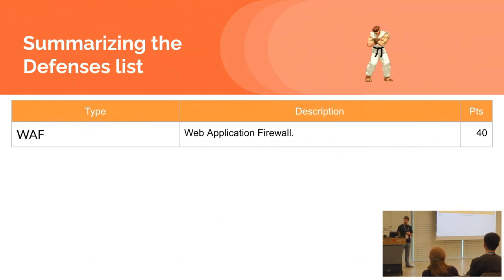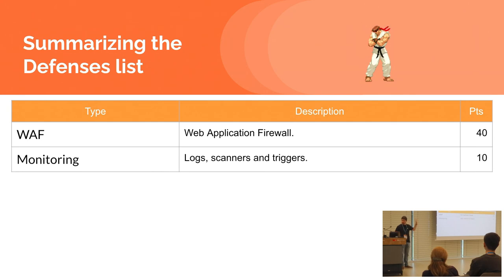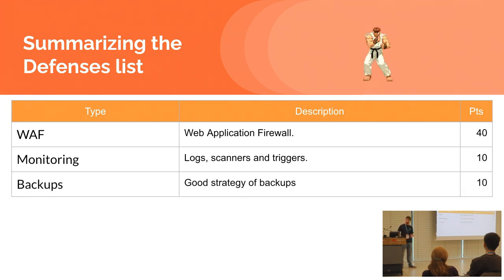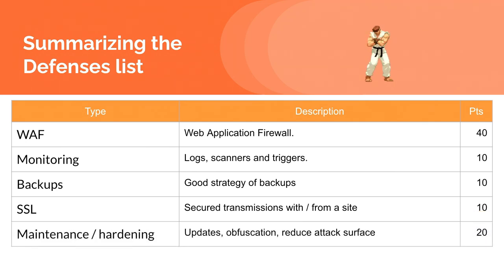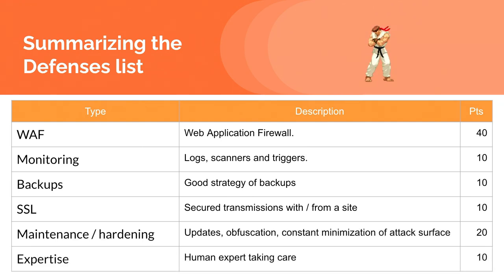Let me summarize the defense categories. WAF is very important in almost all attacks - I give it 40 points. Monitoring - logging, scanners, triggers - 10 points. Backups, even though super important for ransomware - 10 points. SSL certificates - 10 points. Maintenance, hardening, and having someone or a company in charge - 20 points. And the human expert, your knowledge, rather than automatic things - 10 points. All together they add up to 100 points. Having any measure of defense in each of these categories is important.